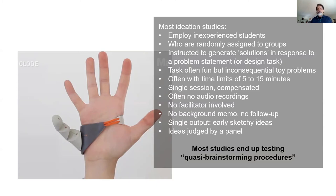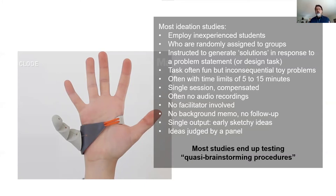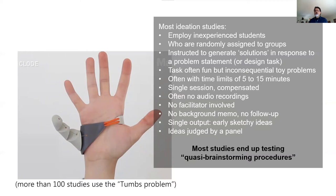Participants are instructed to generate solutions in response to a problem statement. This is different from the use of brainstorming that Osborne explicitly described — storming is different from solving a problem. Storming is about creating leads that can be further evaluated and developed for solutions. The tasks used in ideation studies tend to be quite inconsequential toy problems.